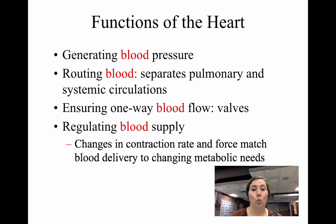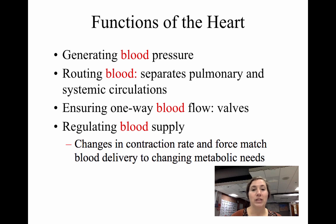The heart ensures one-way blood flow — blood will not go backwards through the heart because of valves. It also regulates blood supply by changing the rate and force of contractions to meet changing metabolic needs. For example, as you exercise, your heart rate increases because you're using more oxygen and have higher metabolic demands.